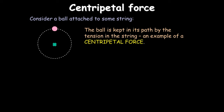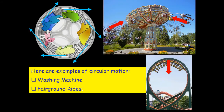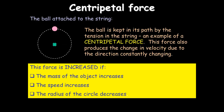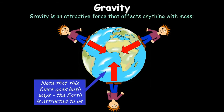Centripetal force applies to all circular motion. A ball kept in a circular path by a string has centripetal force in the tension of the string. In circular motion the body continually accelerates due to a change in direction, even though speed doesn't change. The direction of acceleration and force is always towards the center — without it, the body would fly off in a straight line. The force must increase if mass increases, speed increases, or the radius of the circle decreases.